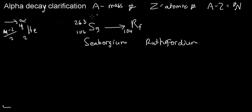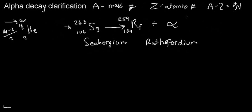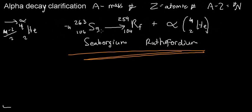Our mass number would decrease by four, so this would be the Rf-259 isotope. We would also have an alpha particle emitted, which is essentially a helium nucleus. This is the example for alpha decay.